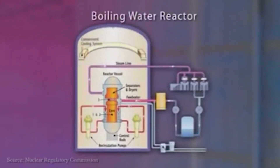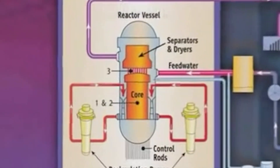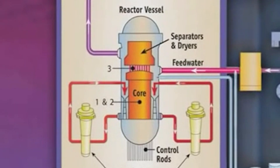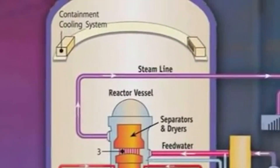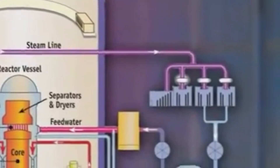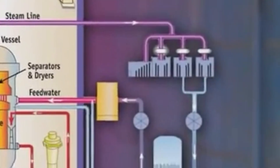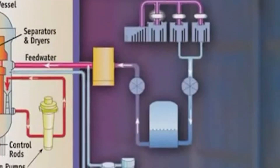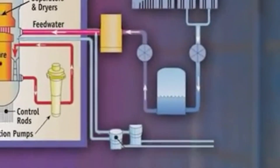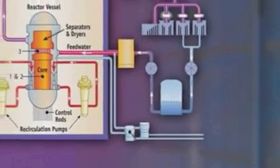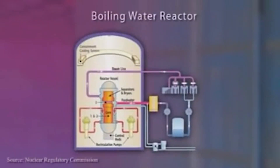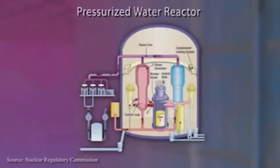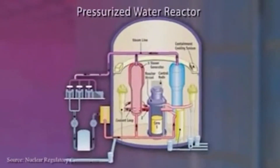In the core of the nuclear reactor, the fission of uranium atoms releases energy that heats water to about 520 degrees Fahrenheit. This hot water is then used to spin turbines that are connected to generators, producing electricity.